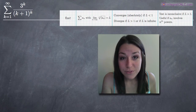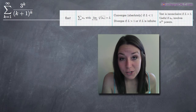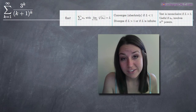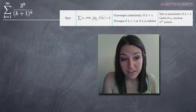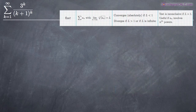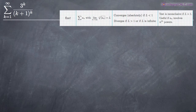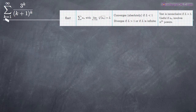Today we're going to be talking about how to use the root test to determine whether or not a series converges or diverges. In this particular case, we've been given the series 3 to the k divided by the quantity k plus 1 raised to the k power, and we've been asked to determine whether or not this series converges or diverges when k starts at 1 and tends towards infinity.